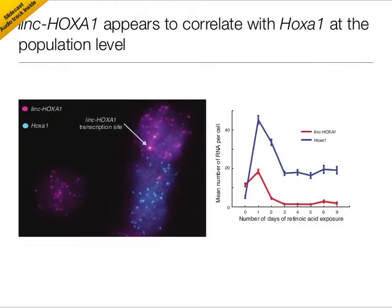The first thing we did to look for regulation was to add retinoic acid to the cells, which will make the cells differentiate towards a neural lineage. We found that the cells showed a concomitant pulse of both lincHoxay1 and Hoxay1 expression, potentially suggesting some sort of positive regulatory interaction between these two genes — like maybe lincHoxay1 upregulates Hoxay1.